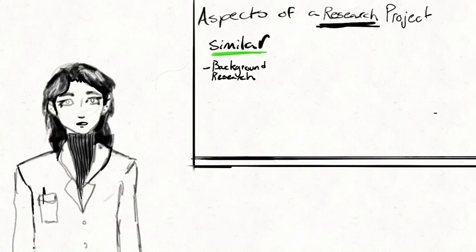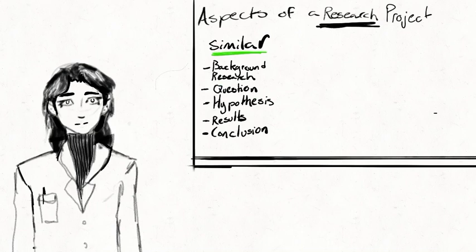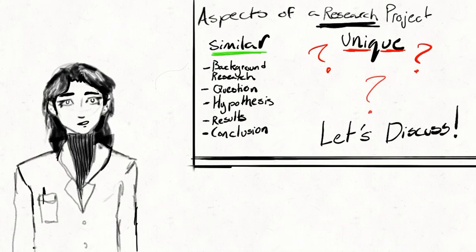These include background research, a question, a hypothesis, your results, and your conclusions. There are also some aspects that are unique to a non-experimental project. Let's look at all the sections in a little more detail.